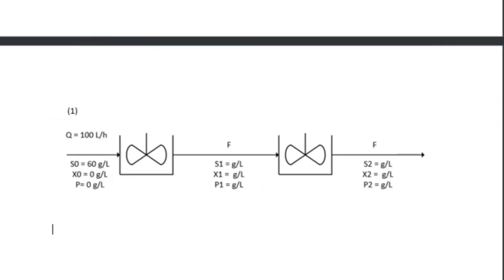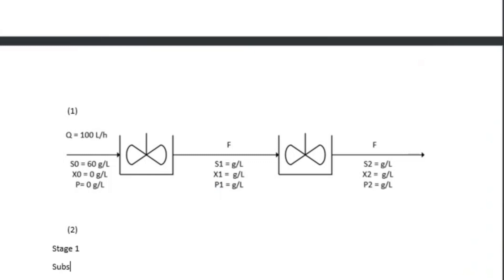For the diagram, I used MS Visio. We have a two-stage chemostat operating at steady state, represented by two vessels. S0 is given at 60 grams per liter. The initial cell concentration X0 is zero, and the initial product concentration P0 is also zero grams per liter. For the first stage, everything is represented by subscript one, and for the second stage, by subscript two.